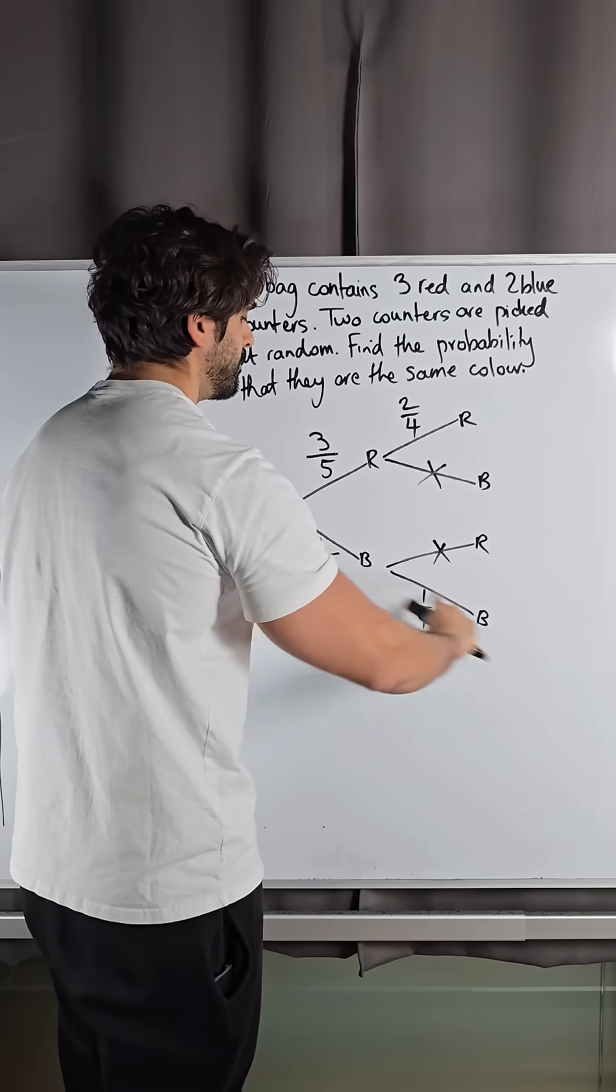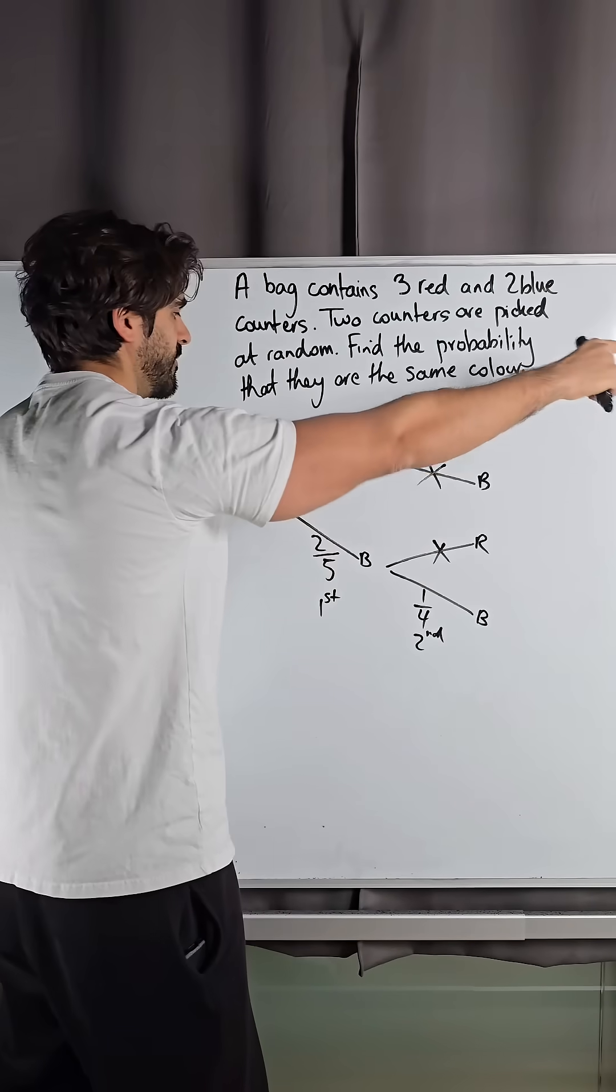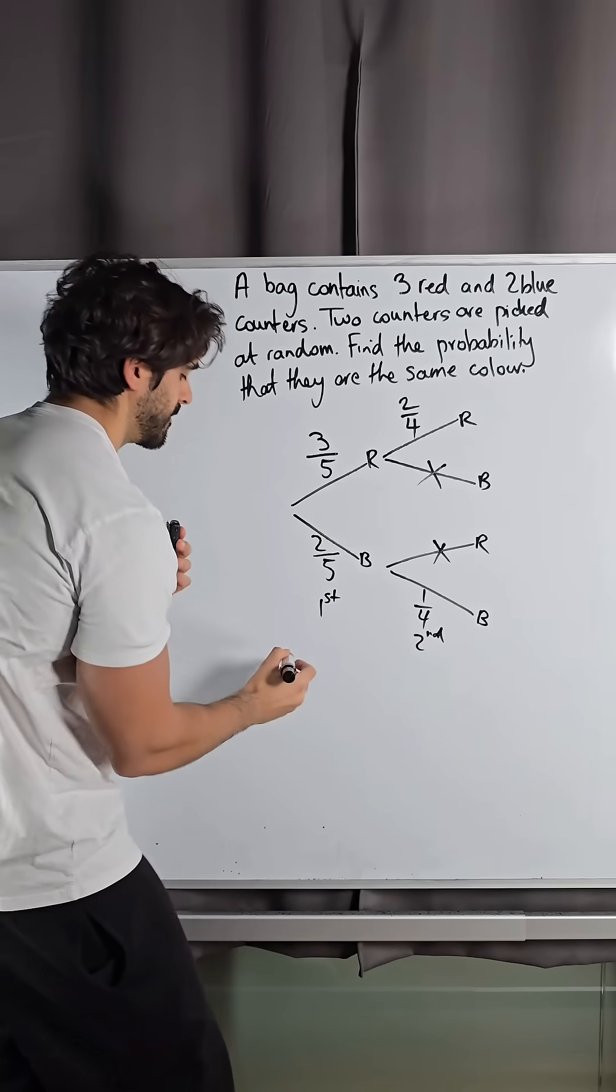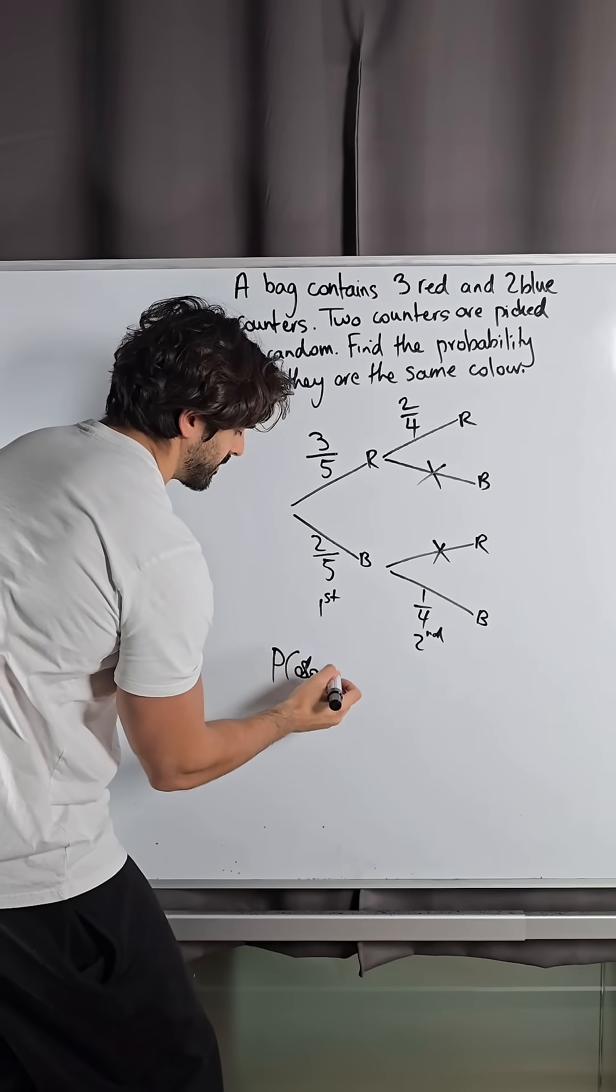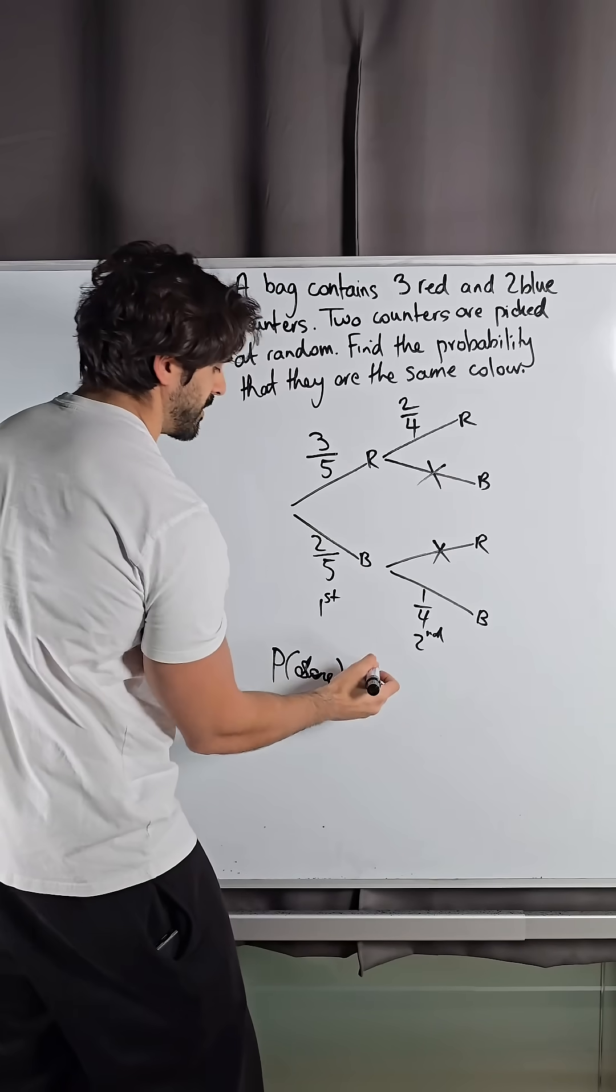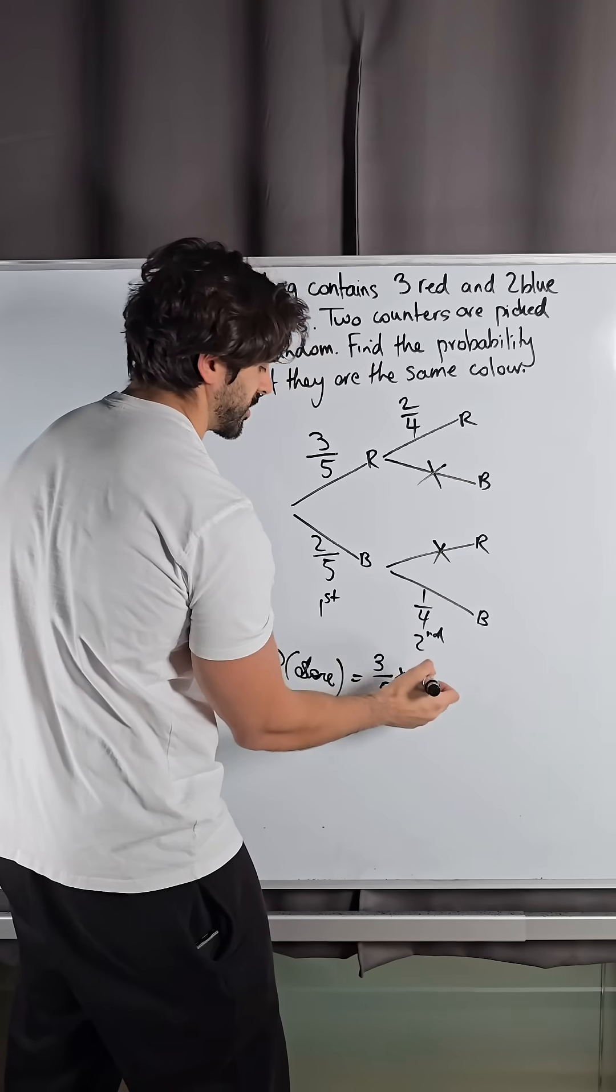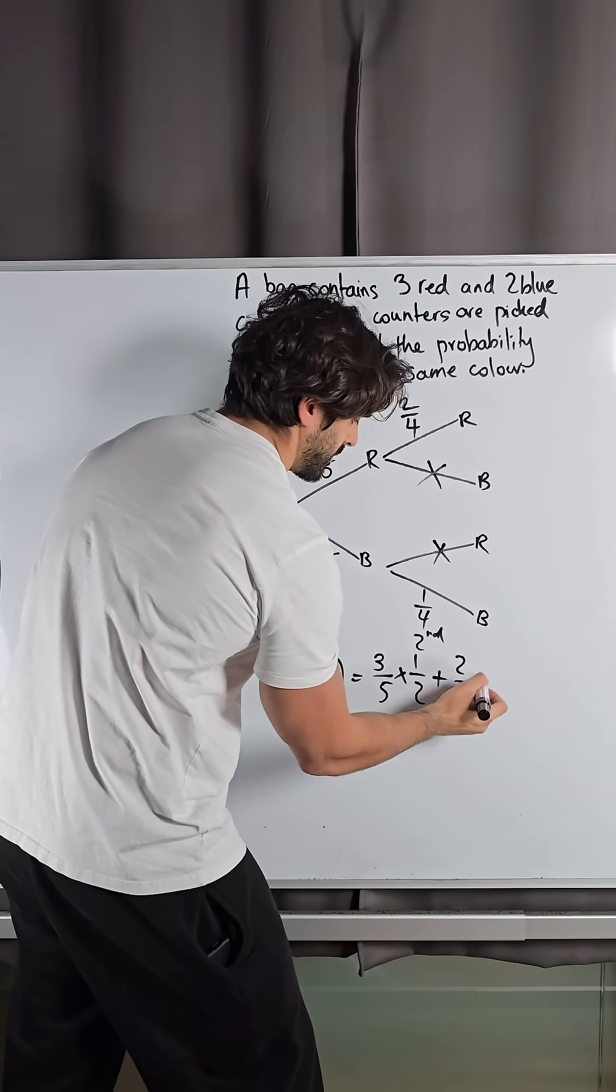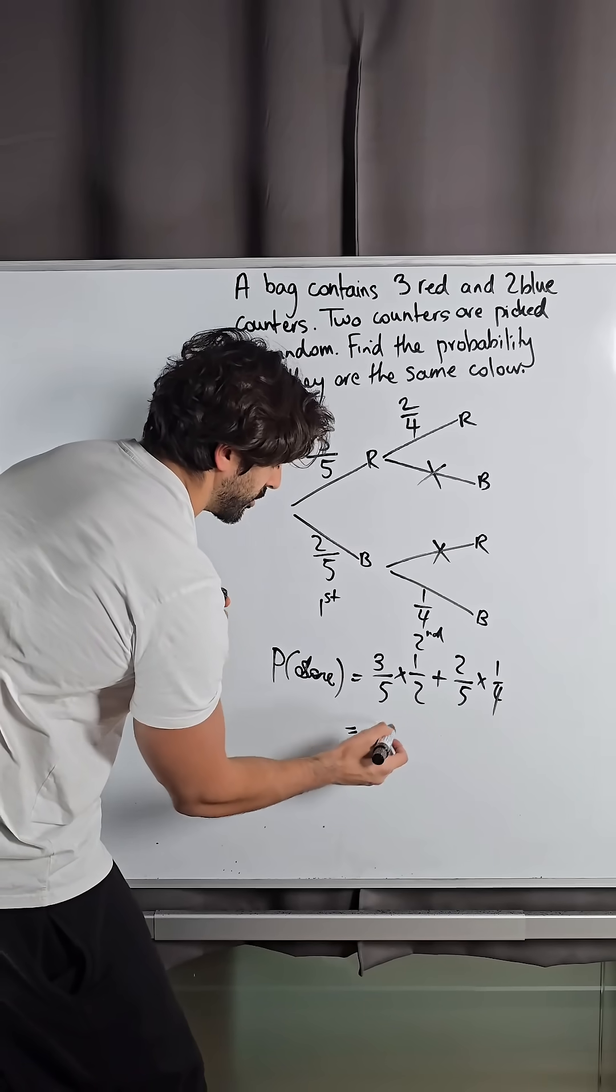Now we always multiply across branches because they are consecutive events, and then each different branch we add them together. So the probability of same color is three-fifths times two-quarters, which actually simplifies to a half, plus two-fifths times one-quarter. What does that give us? Three over ten.